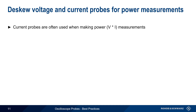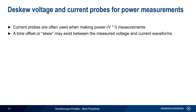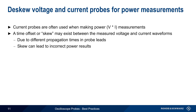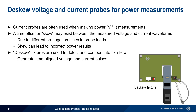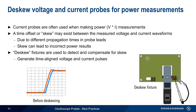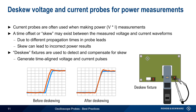Current probes are often used together with voltage probes when making power measurements, since power measurements require simultaneous measurement of both voltage and current. In some cases, a time offset or skew may exist between the measured voltage and current waveforms due to different propagation times in the probe leads, and this skew can lead to incorrect power results. Special de-skew fixtures are used to detect and compensate for skew by generating time-aligned voltage and current pulses. If these test waveforms are skewed, an appropriate de-skew or time offset value can be entered on the scope to bring the current and voltage waveforms back into phase and improve the accuracy of power measurements.